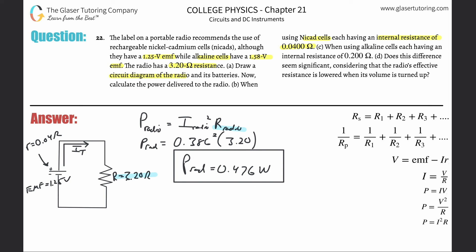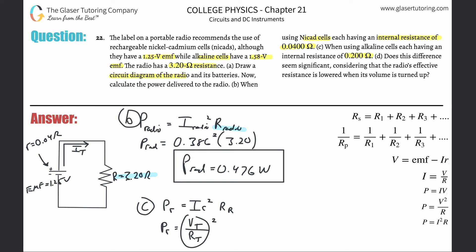For part C — using alkaline cells each having an internal resistance of 0.2 ohms — we use the same formula: power delivered to the radio equals current squared times resistance of the radio. We use Ohm's law to find the current: total voltage divided by total resistance. Since current is constant in series, the total current equals the current through the radio.